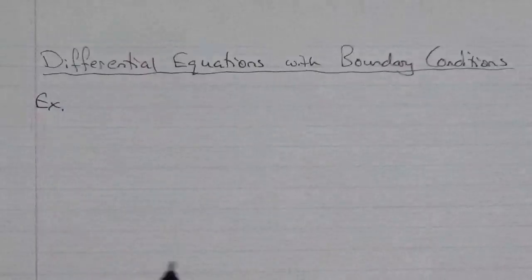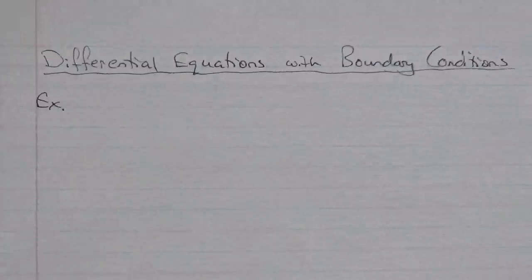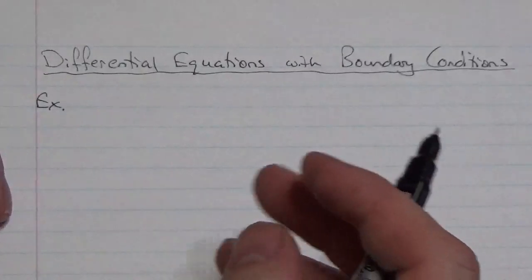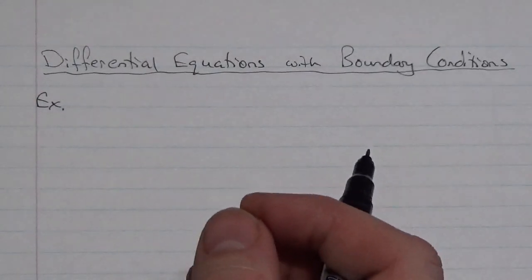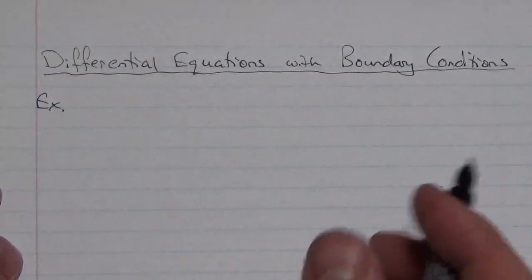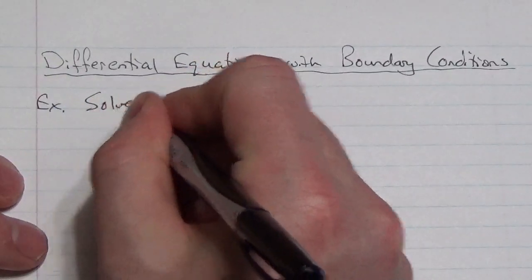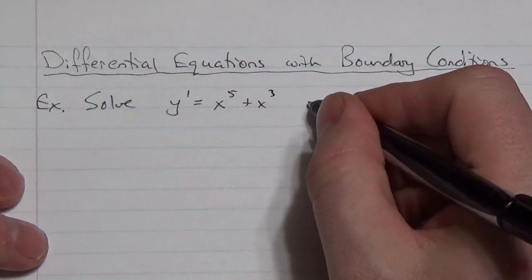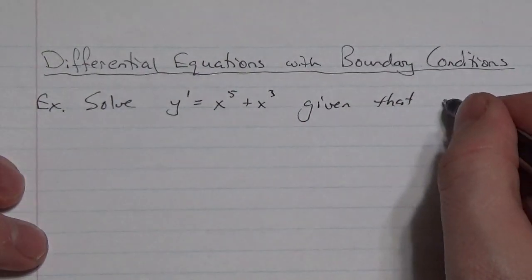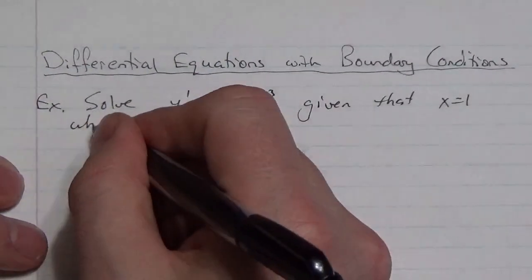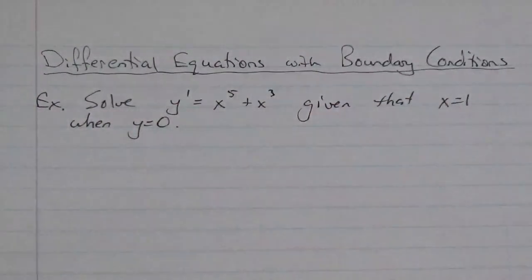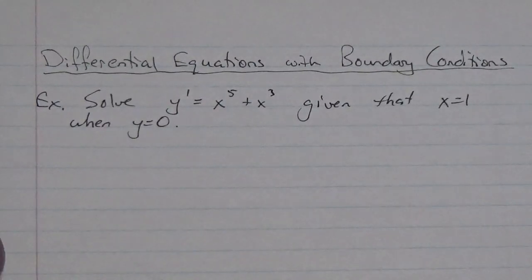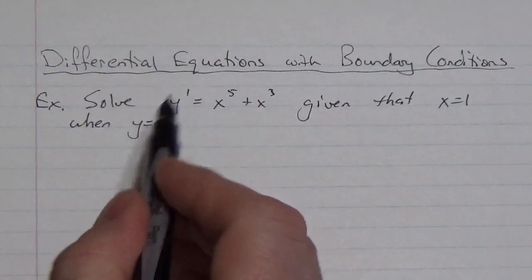Let's take a look at an example. I should back up a little bit and say that when we're talking about solving differential equations, what we're meaning is we're going to look at equations that have derivatives in them, and what we're trying to look for is the function that satisfies that given equation with the derivative in it. For example, we might say solve y' = x^5 + x^3, given that x = 1 when y = 0.